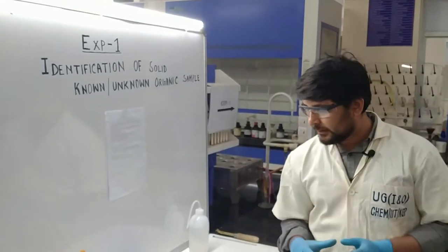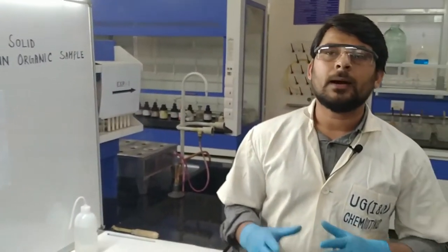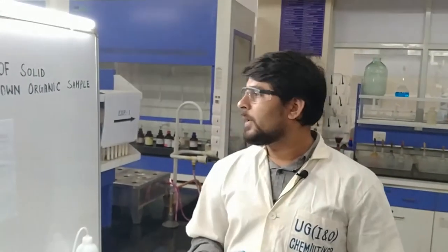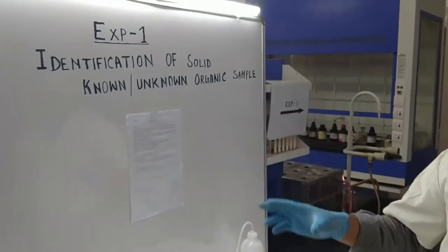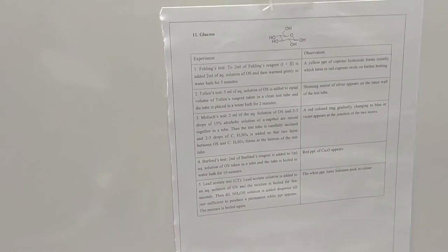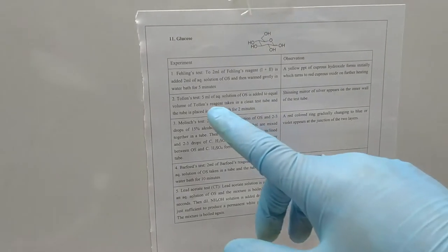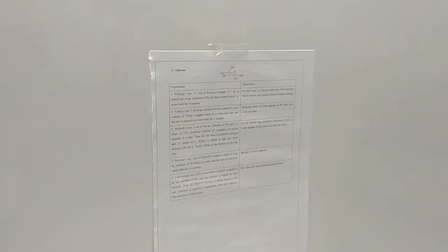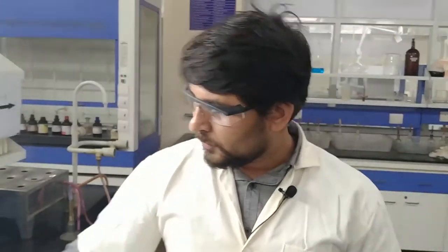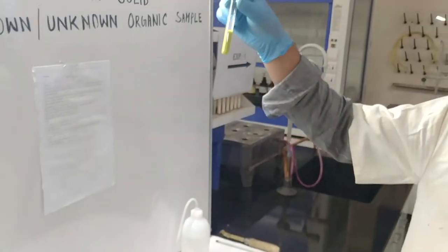From the preliminary test, we get an idea that our sample may be glucose. We are doing a known sample today, but sometimes unknown samples are provided. Now we have to perform confirmatory tests for glucose. These tests are provided in the manual. The first confirmatory test is the Fehling's test, which we already did in the preliminary, so no need to do it again. The result is positive.